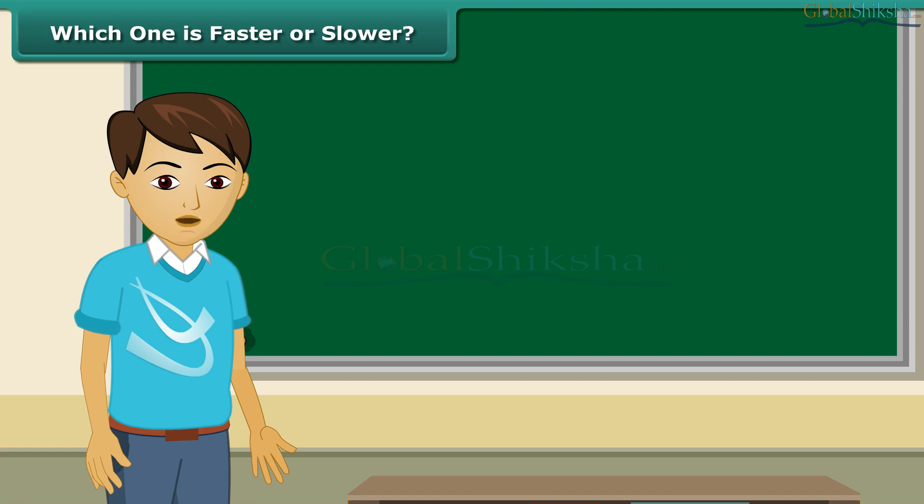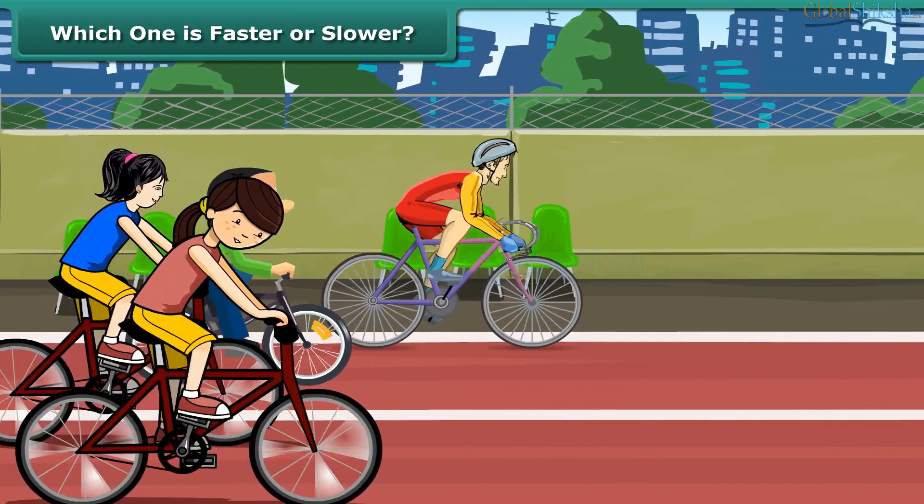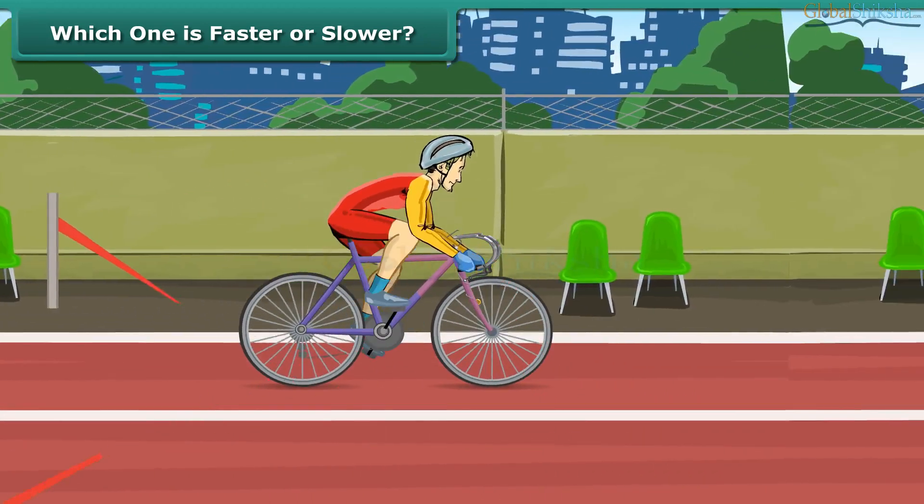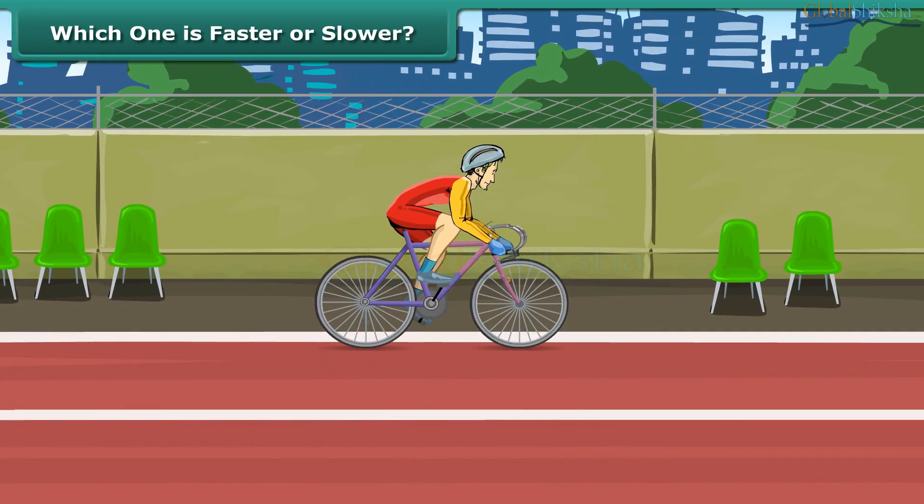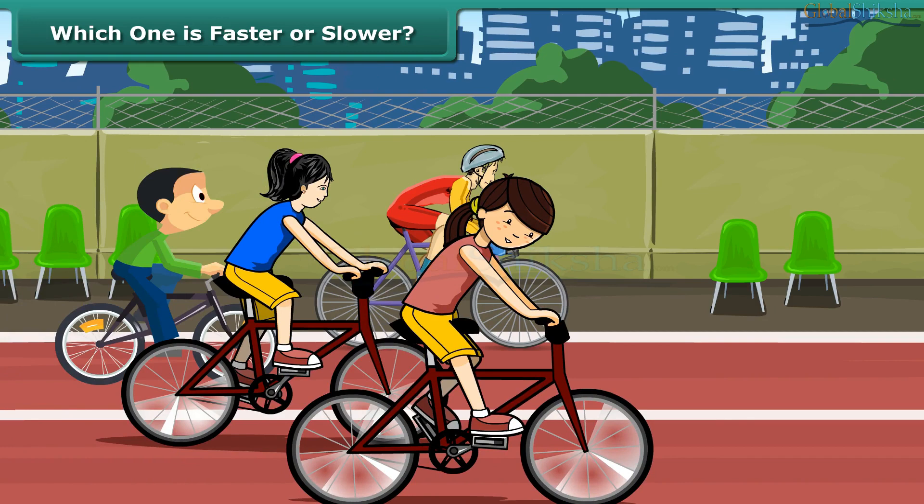Consider a 1000 m cycle race. When the whistle blows, the race begins. Every cyclist starts at the same time. Suppose after 10 minutes, one cyclist reaches the finishing line. This means that the winner covered the distance of 1000 m in 10 minutes.